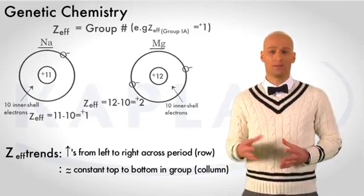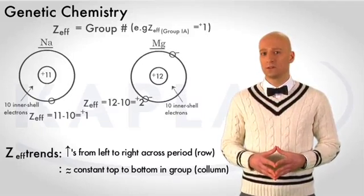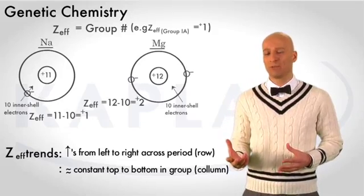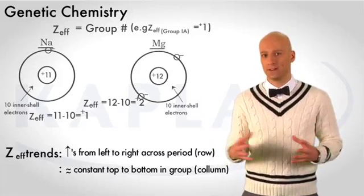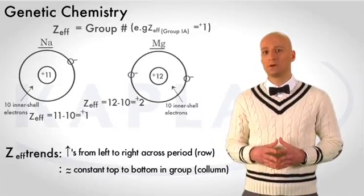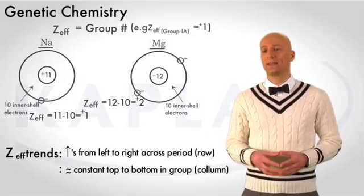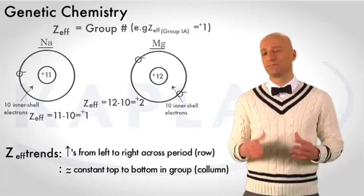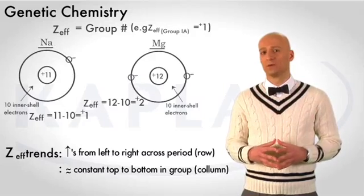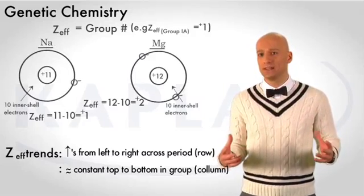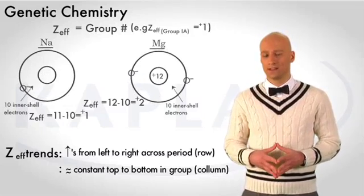Down a group, or column, however, the increase in positivity of the nucleus is counterbalanced by the increase in the number of inner shells that sit between the nucleus and the valence electrons. And so, in effect, the Z-effective remains constant down a group. However, the fact that the valence electrons are further from their nucleus as we move down a group results in a decrease in the attractive force that exists between the nucleus and the valence electrons.